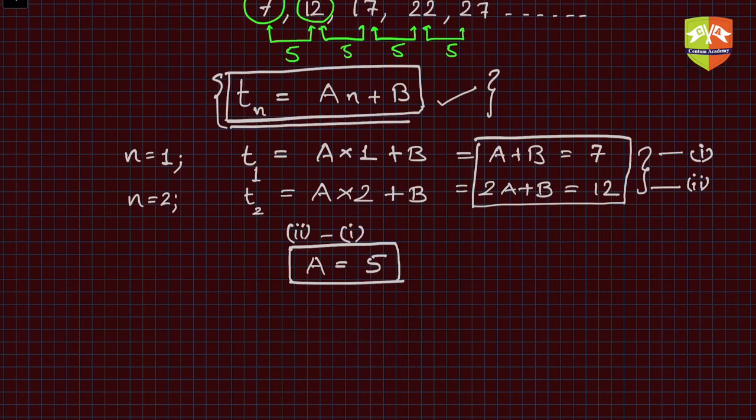If A = 5, clearly from equation (1), B will be 7 minus A, which is 7 minus 5, which is 2. Hence I get the nth term relationship as tn = 5n + 2. This is the generic relationship for any given term.